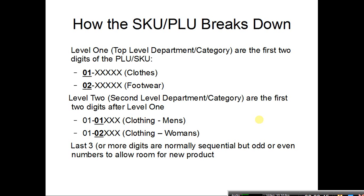Then you take that information and it breaks down pretty easily. Level one — our top-level department or category, like clothes — is the first two digits of the PLU or SKU. So clothes is 01, footwear is 02. Level two — the second-level department or category — is the next two digits. So 01-01 is clothing men's, 01-02 is clothing women's. The last three digits are normally sequential, but I recommend sticking with odd or even numbers in case you have something to add in later. It never hurts to leave contingency space.